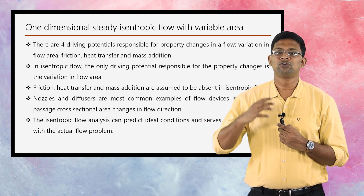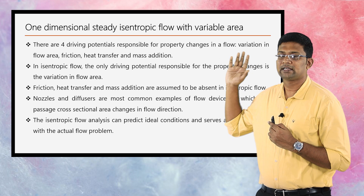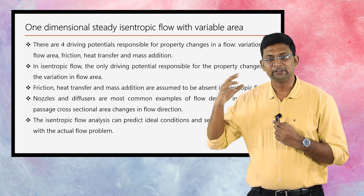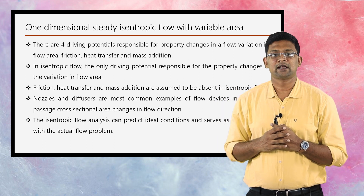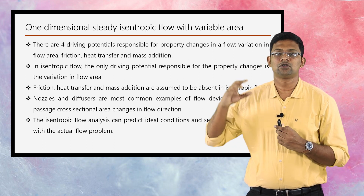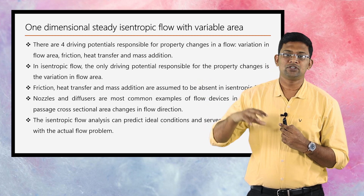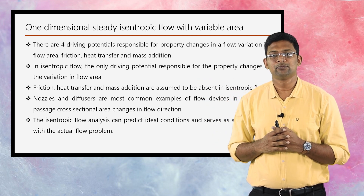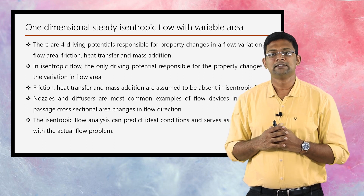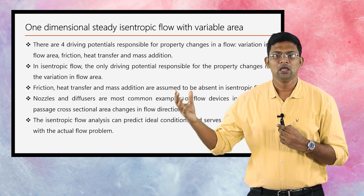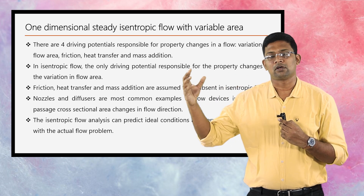If the flow parameters do not vary with time, it is known as a steady flow. Along with this condition, if the flow parameters do not vary in the direction normal to the flow direction, it is also known as one dimensional. The equations and concepts developed in this module are of great practical value in analyzing many flow situations practically in duct flows where there is a gradual variation in the flow cross-section area.